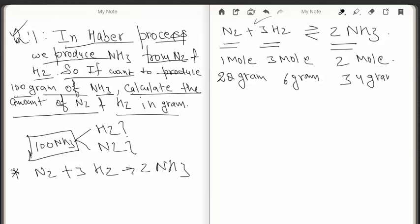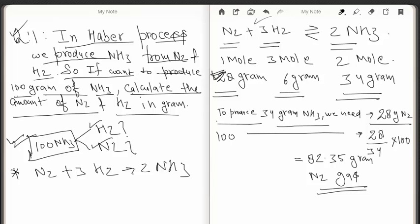Converting moles to weights: 28 grams of nitrogen requires 6 grams of hydrogen to produce 34 grams of ammonia. This relation tells us the weight of nitrogen and hydrogen required to produce 34 grams of ammonia. To produce 100 grams of ammonia, we need (28/34) × 100 grams of nitrogen, which equals 82.35 grams of nitrogen.